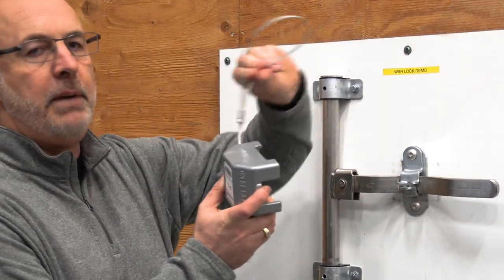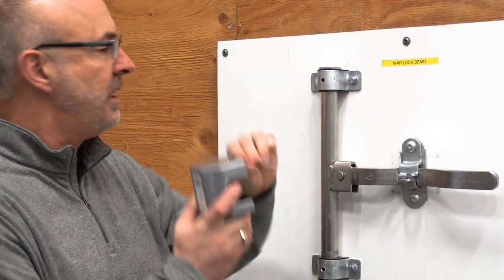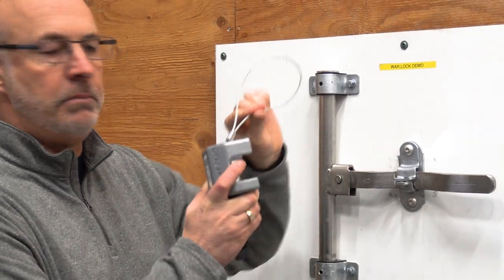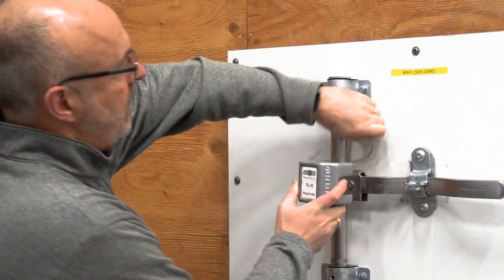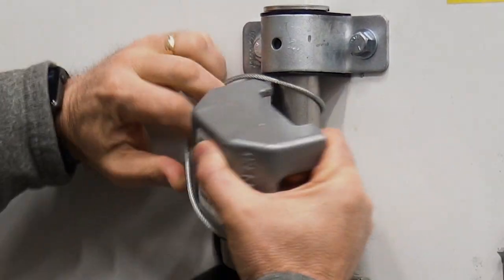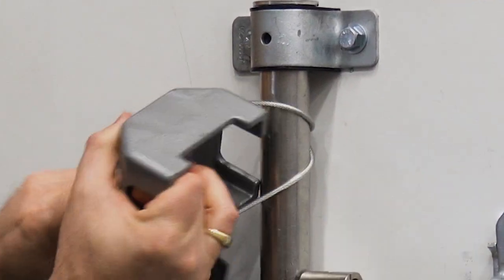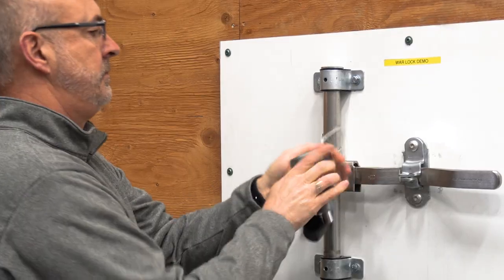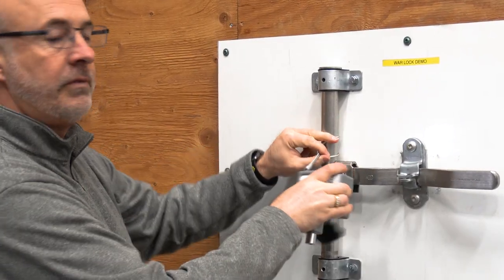First, the cable. This is used to secure the Warlock to the door assembly. Slide the cable through, put your Warlock in place around the cable system. This keeps it secure from falling off.